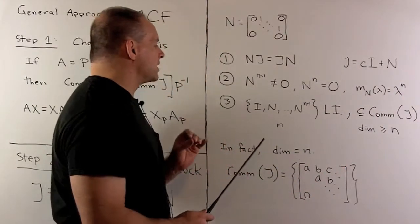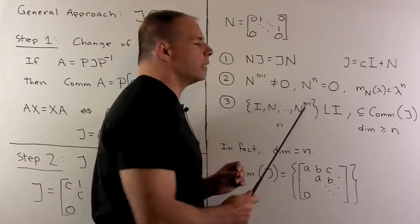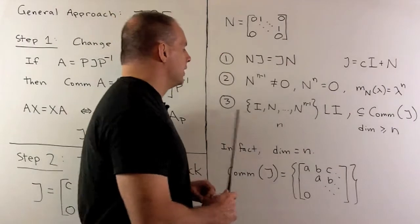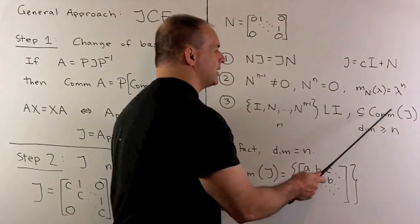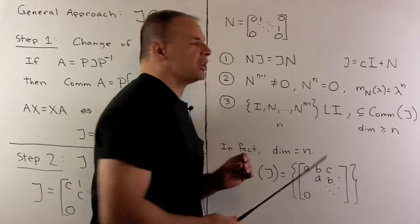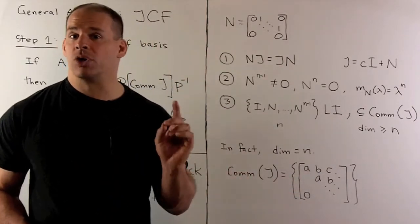That means the minimal polynomial is going to be lambda to the N. And we'll have that the set I, N, N squared, up through N to the N minus one, is linearly independent. Now, this set is going to be a subset of the commutant of J. We have N elements here, so the dimension of the commutant of J is greater than or equal to N. And that's our result.